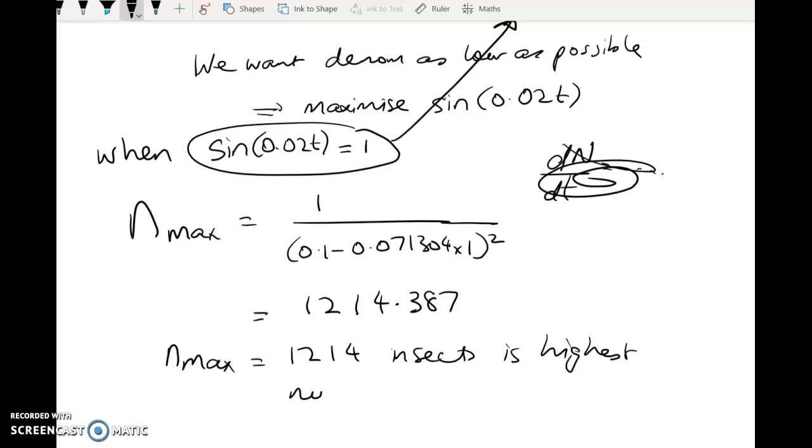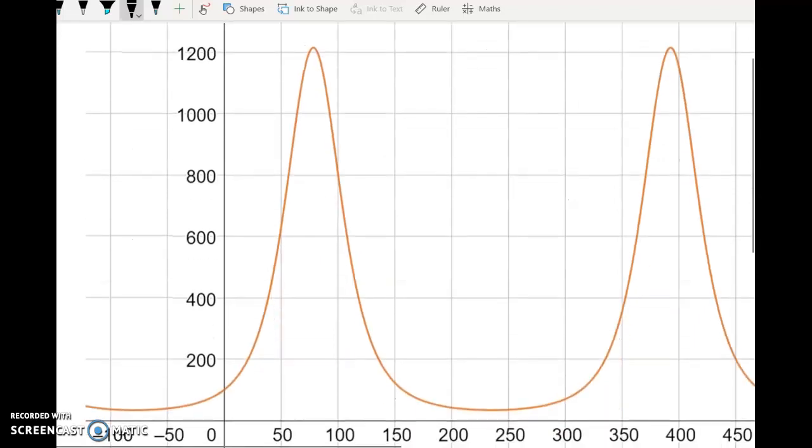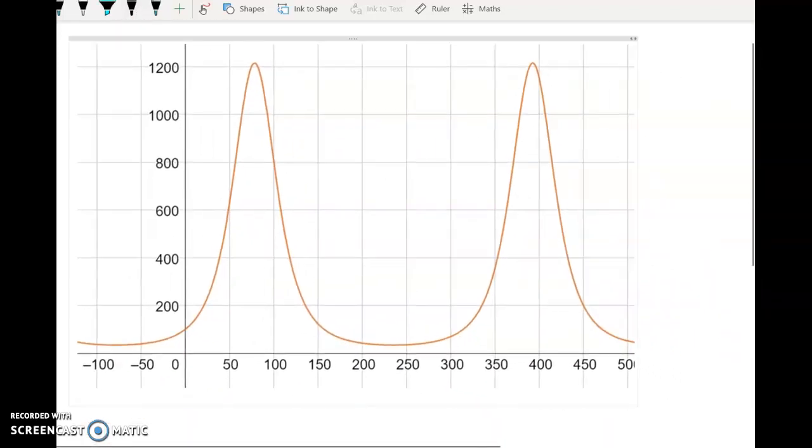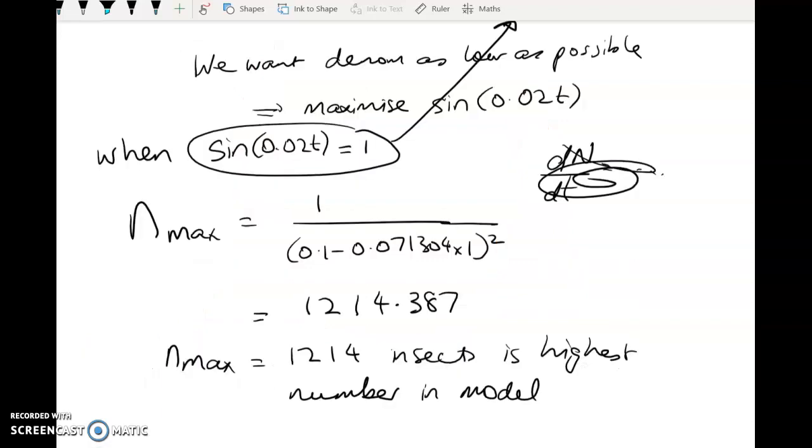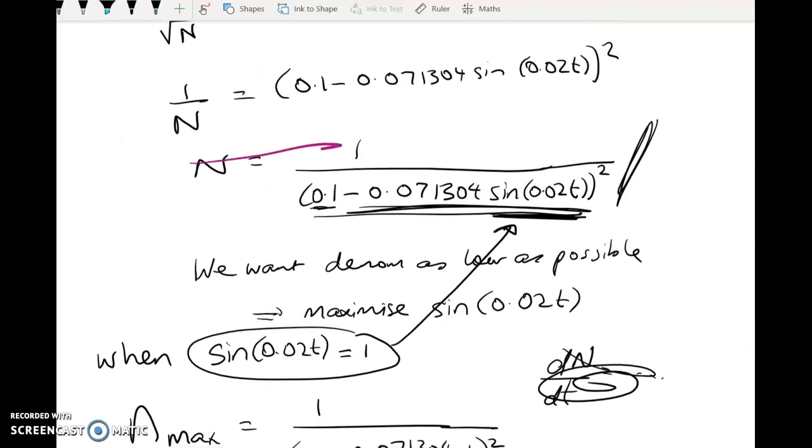So I set the highest number. Don't hang up, I've got a graph to show you. So no one run away. Because this actually is a really cool kind of model. 1,214 insects is the highest number in this model. So when you chuck that into GeoGebra, you get this graph, which I thought some of you would probably quite like.